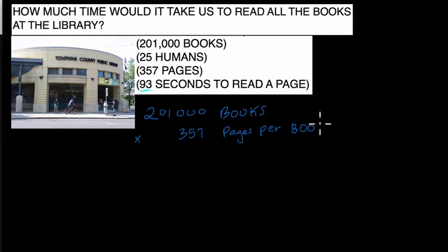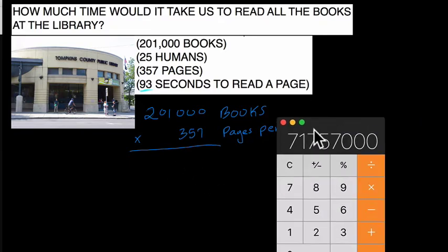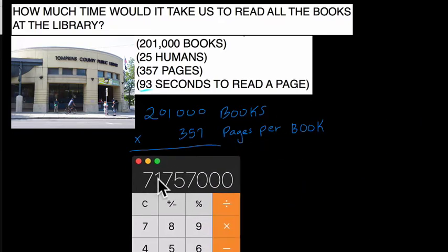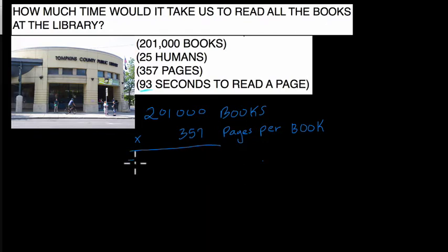This will tell me, well, if you think about what this is saying, this will tell me the total number of pages that have to be read in the library. Every book has 357 pages on average. We can figure out the number of pages based on this sample. So if we multiply these two, and I just did it here, we get this number, 71,757,000 pages. 71,757,000 total pages to read.